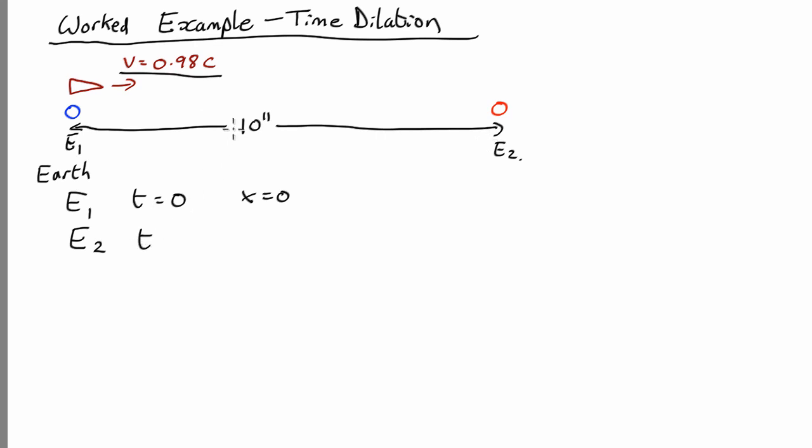So that's going to be, let's call that the distance, it's just going to be the distance divided by its velocity, and x is going to be the distance 10^11 meters. Okay, so that's the Earth's frame of reference and that's very straightforward.